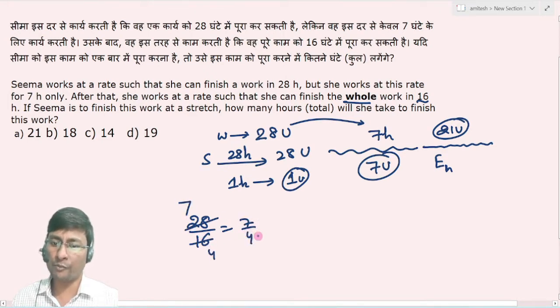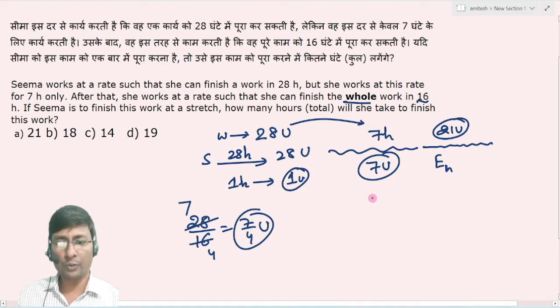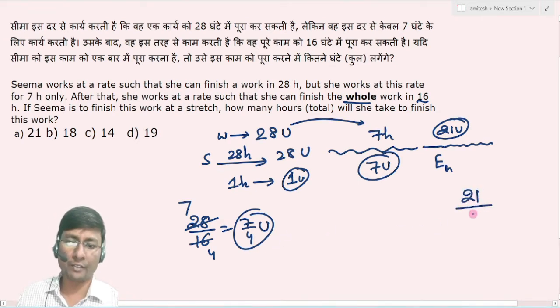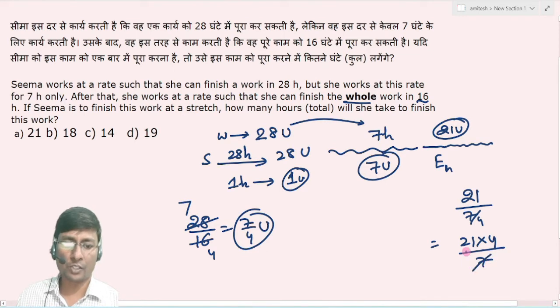That implies 7/4 unit के rate से काम करेगी. तो next 21 unit काम को 7/4 unit के rate से काम करने में कितना time लगेगा? Simply 21 divided by 7 by 4. यह simply क्या हो जाएगा? 21 into 4 upon 7. तो 7 से यह 3, that implies 12 hours.